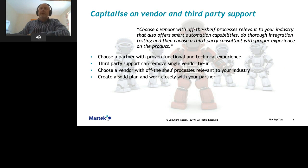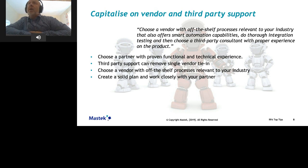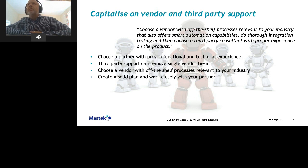The next lesson: capitalize on vendor and third-party support. Choose a vendor with off-the-shelf processes relevant to your industry that also offers smart automation capabilities, do thorough integration testing, and choose a third-party consultant with proper experience on the product. Choose a partner with proven functional and technical experience — remember that third-party support can remove single-vendor tie-in, as they'll understand all the different RPA vendors. Use your partners closely; they understand how to plan for your projects and how to get the best return on your investment.